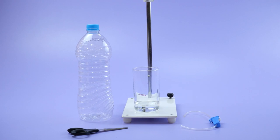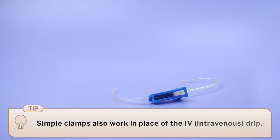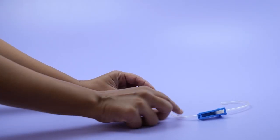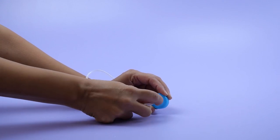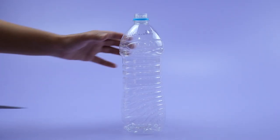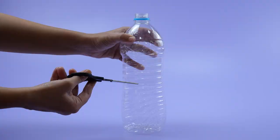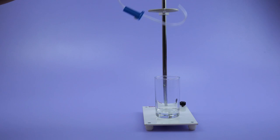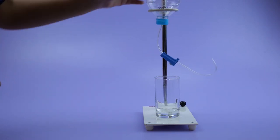To make a separatory funnel, we need a plastic bottle with a tapering shape, an IV drip with a flow controller, and some glue. Cut the IV drip with the flow controller attached to it — be careful while cutting the tube. Make a small hole in the cap of the plastic bottle. Fix the lower end of the IV drip into the hole of the cap such that liquid does not leak from the joint. Now cut the base of the plastic bottle using scissors — be careful while cutting — and fix the cap of the bottle. Fix this separating funnel in the ring of a retort stand.